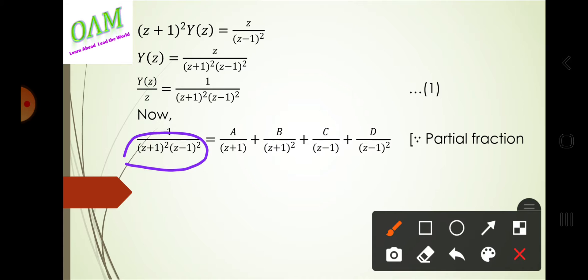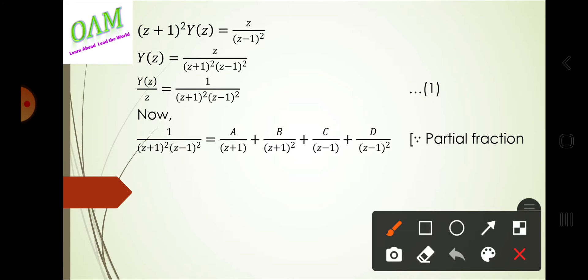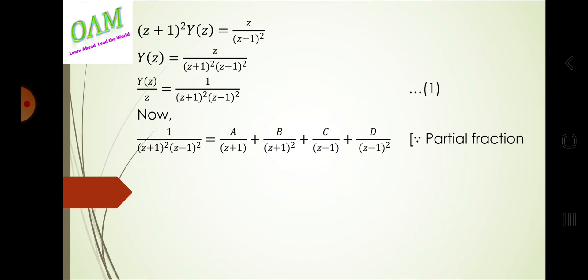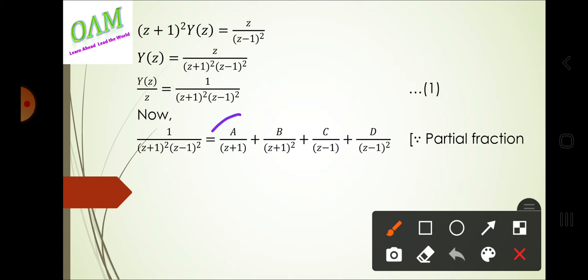We apply partial fractions. The expression is decomposed as: A/(Z+1) + B/(Z+1)² + C/(Z−1) + D/(Z−1)². We then apply cross multiplication, with the denominator being (Z+1)²·(Z−1)².